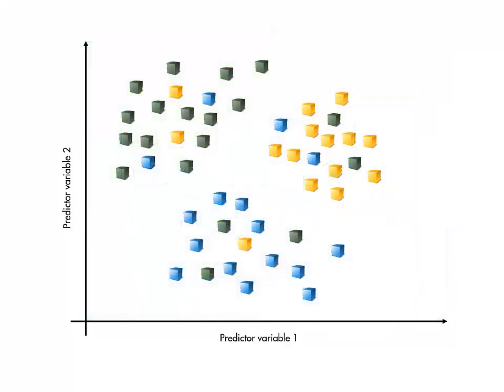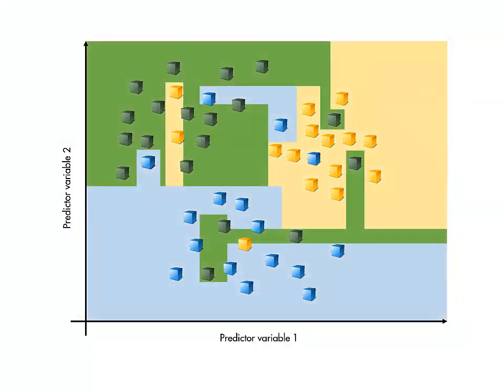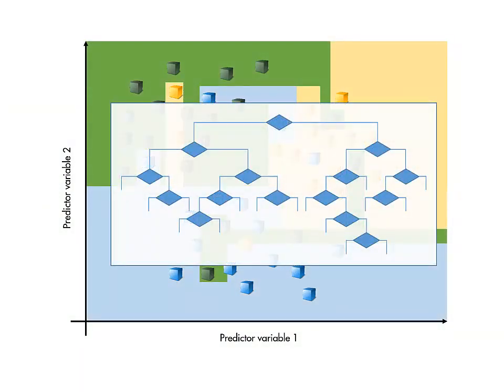As always, realistic data will have noise. Theoretically, a sufficiently complex tree could fit an arbitrarily complex boundary between points. However, this generally means that the model is overfitting the data.